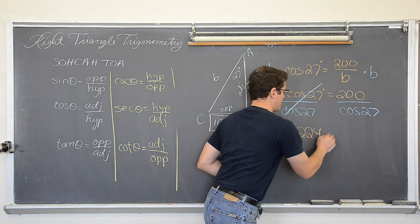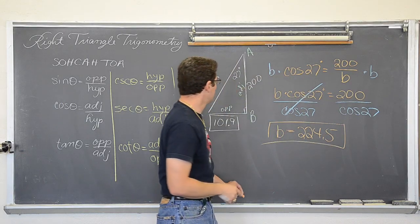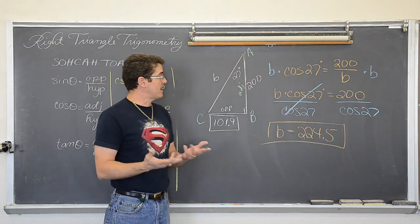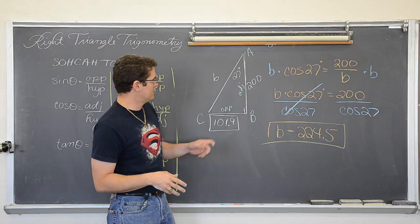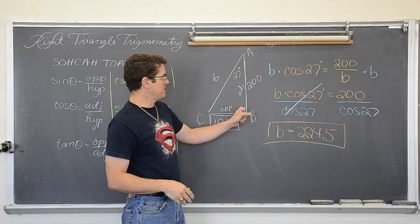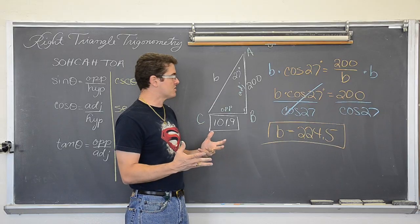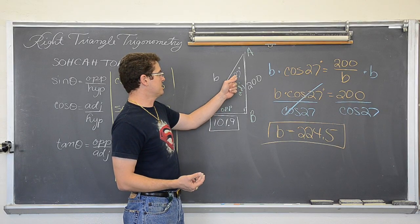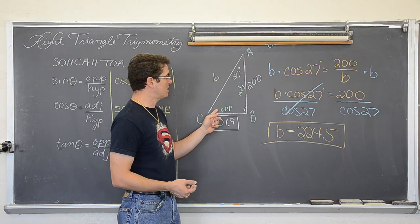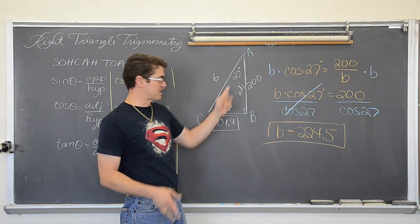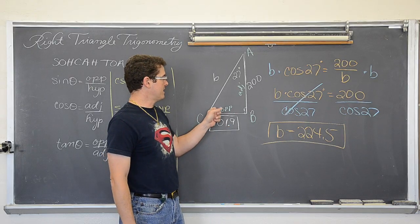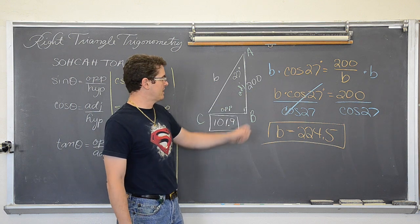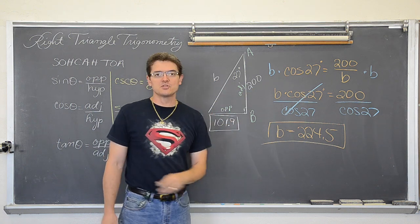Type that into your calculator correctly and you get 224.5 units. Should we be happy with that answer? Yes indeed. The sides opposite the largest angles should be the largest. 27 degrees is the smallest angle and it is opposite the smallest side of 101.9. The other acute angle is 63 degrees, opposite 200. And 90 degrees, the largest angle, is opposite the largest side of 224.5.